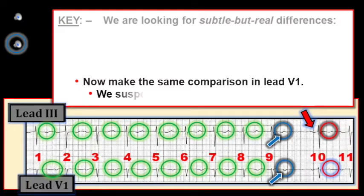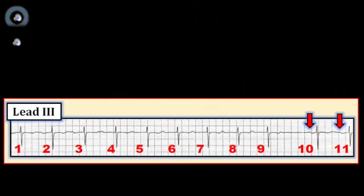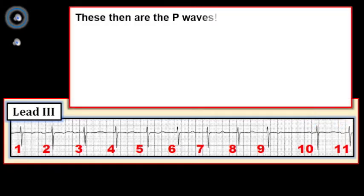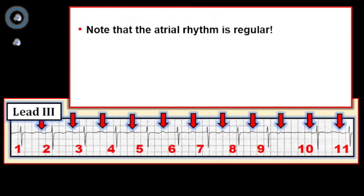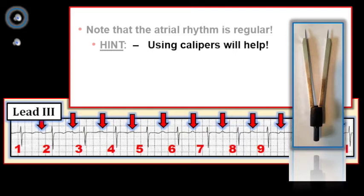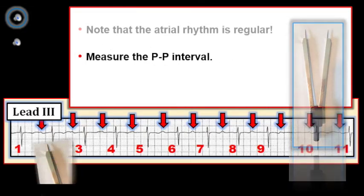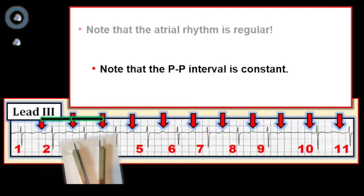We therefore suspect there are many P waves on this tracing. These are the P waves, and it makes perfect sense because the atrial rhythm is perfectly regular — the P-to-P interval is constant throughout. When there is time to do so, using calipers facilitates interpretation of any complex rhythm strip. There is no better or faster way to determine relationships between P waves and the QRS, or to confirm whether the rhythm is regular. Using calipers to carefully measure the P-to-P interval confirms the atrial rhythm is regular.